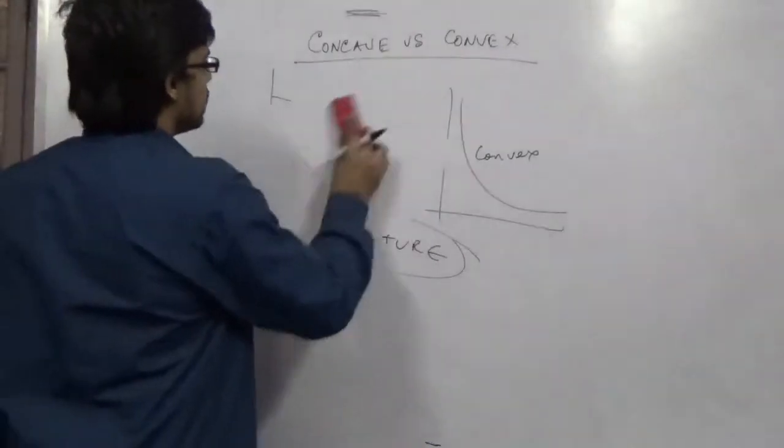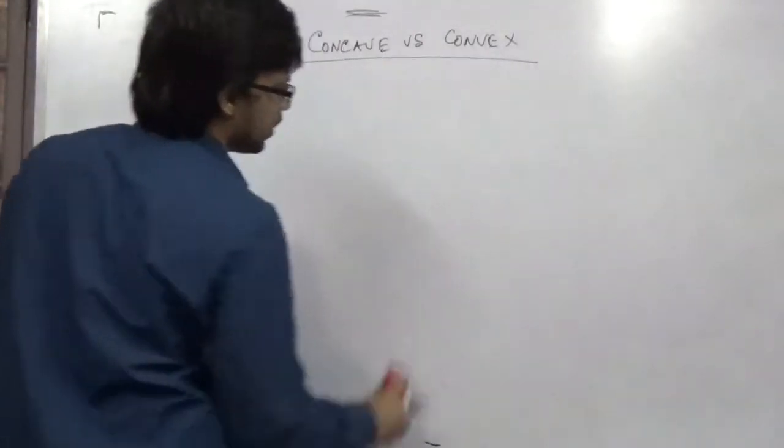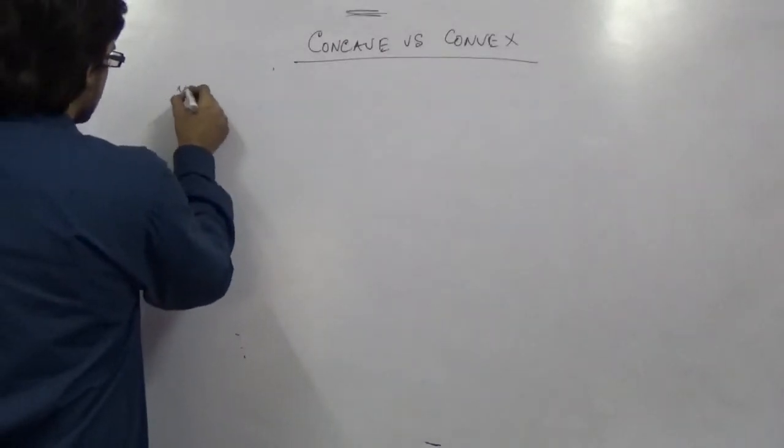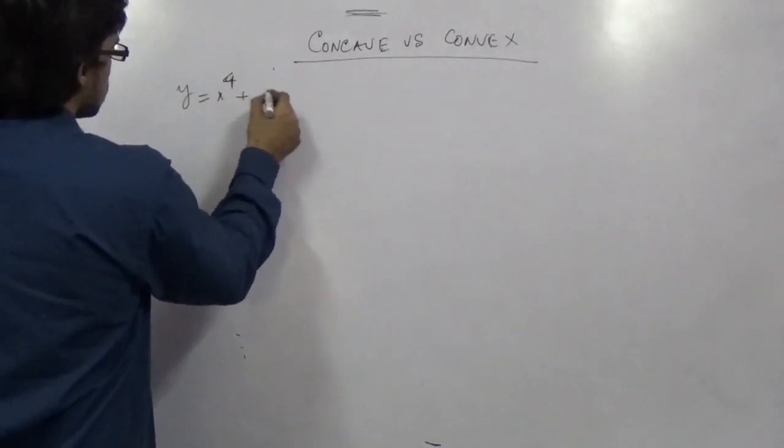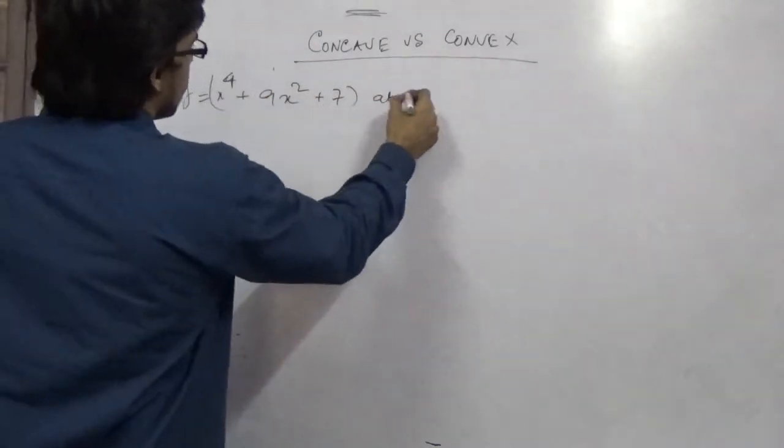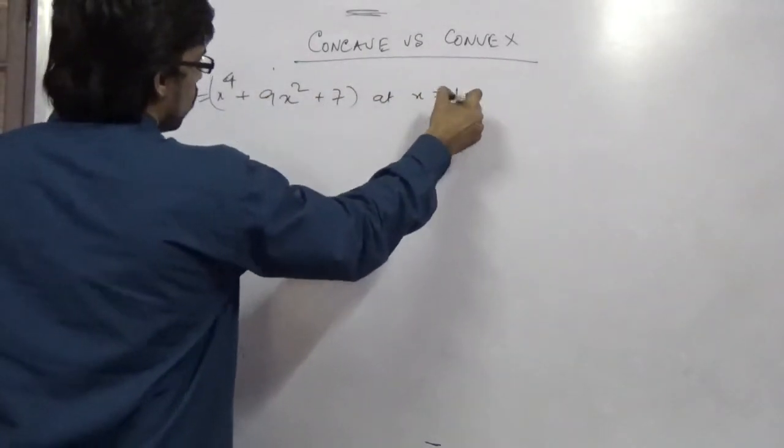So let's do a second order derivative check on a particular equation and let me tell you whether it is positive or negative. So for example, y equal to x to the power 4 plus 9x squared plus 7 at x equal to 1.